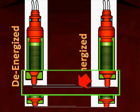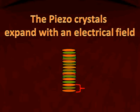Let's blow that up so we can see where the arrow is pointing. There's a space, meaning that when the PCM commands the injector open, it shocks those crystals and they change their shape, creating a very small opening in the injector pintle. The piezo crystals expand or contract within an electrical field, and this graphic shows the stack simply expanding and contracting.